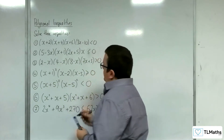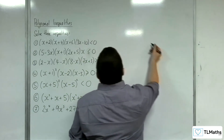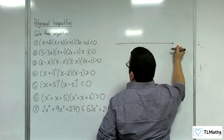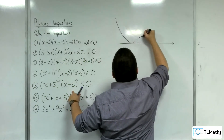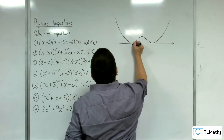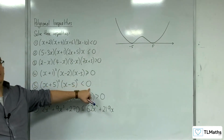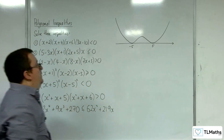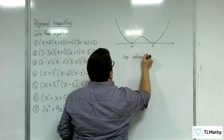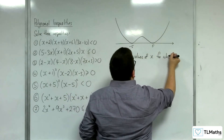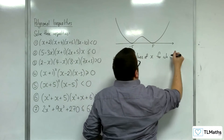Number 5: (x+5) squared times (x-5) squared is less than 0. This is a positive x to the 4, coming down from the top left, bouncing at minus 5 and bouncing again at 5. Where is the graph below the x-axis? It never is. So there are no real values of x for which this is true.